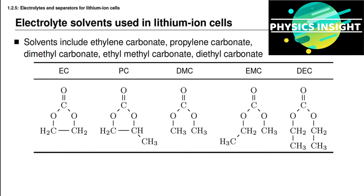Ethylene carbonate is abbreviated EC, propylene carbonate is PC, dimethyl carbonate is DMC, ethylmethyl carbonate is EMC, and diethyl carbonate is abbreviated DEC.